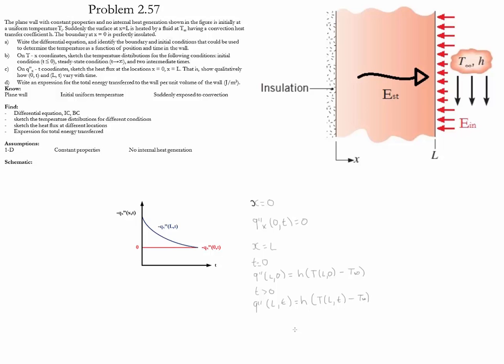Notice that in the plot we have negative q"x, meaning the flux is dissipated away from the wall and taken by the fluid. At time equal to 0 we have the maximum amount of flux being dissipated. That flux reduces over time, indicating that as time increases the temperature difference — and thus the heat transfer — also decreases.